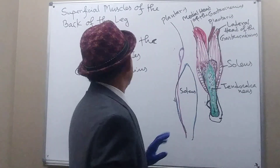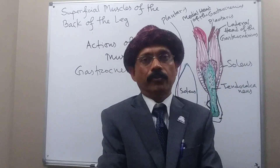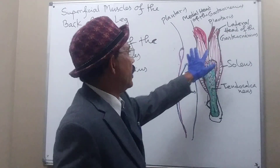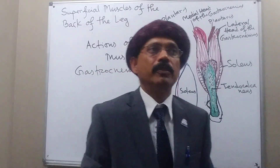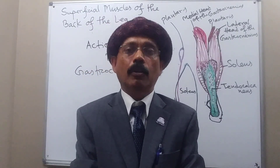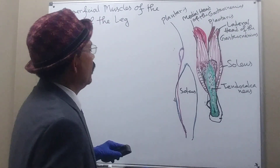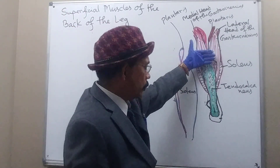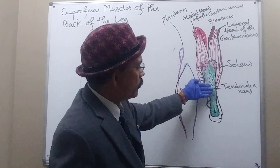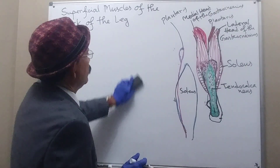The soleus acts only on the ankle joint causing plantar flexion. The gastrocnemius contains fast-twitch type 2 white fibers, used for quick actions like running and jogging. The soleus contains type 1, slow-twitch red fibers for sustained action such as standing for a long time. The soleus gives insertion throughout the length of the tendon from the middle of the leg downward.